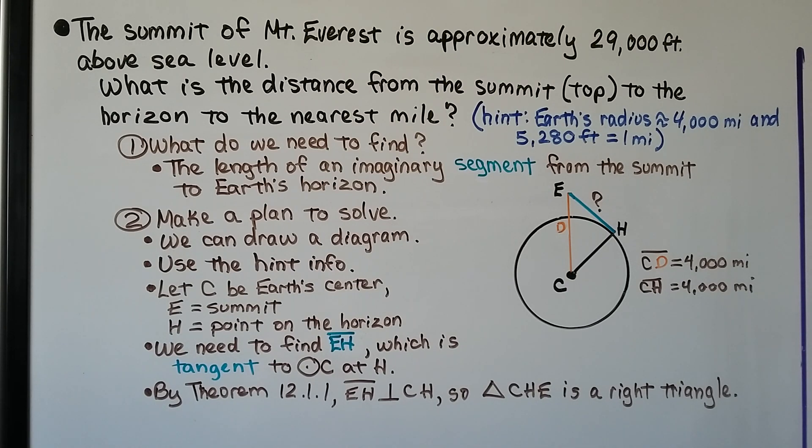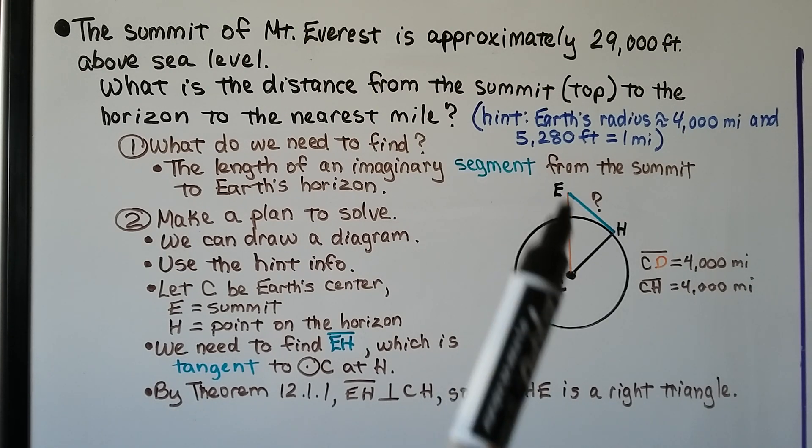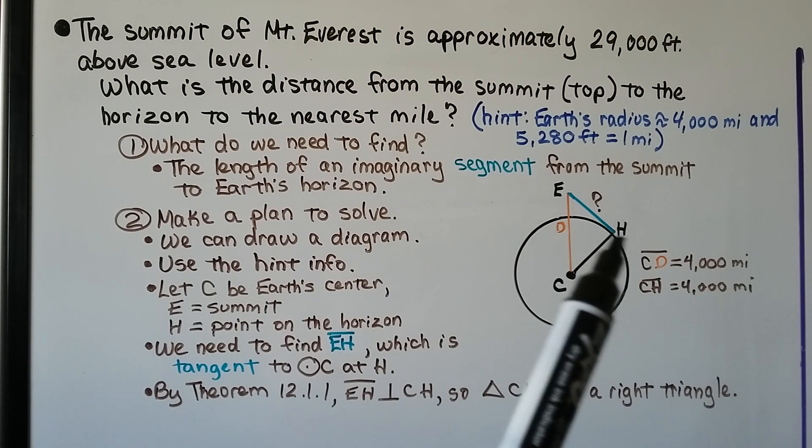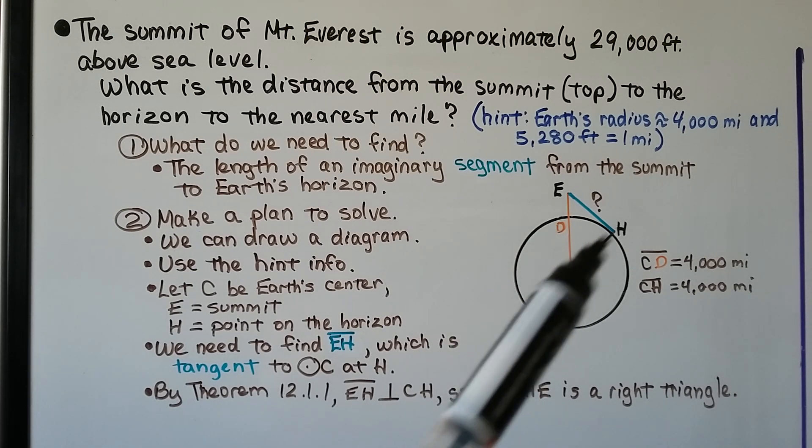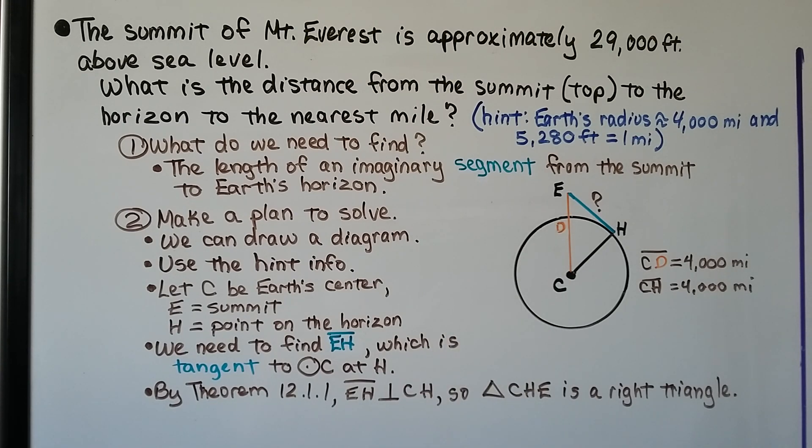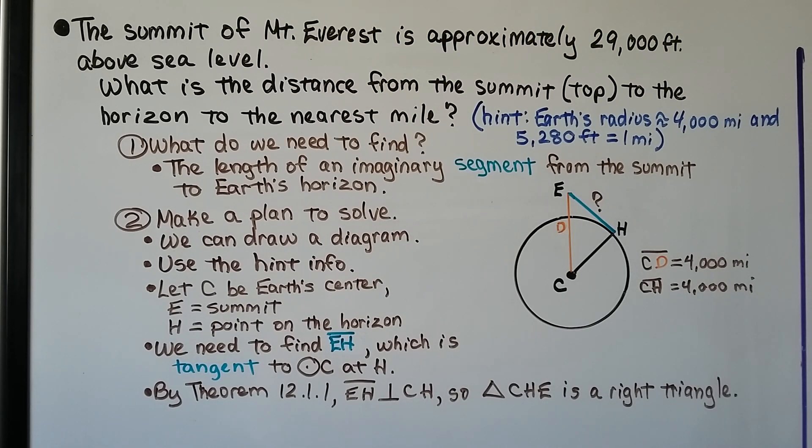We make a plan to solve it. We can draw a diagram. We're going to let C be Earth's center. We're going to let E be the summit for Everest. And we're going to let H be the point on the horizon. We know segment CD must be about 4,000 because that's a radius. If CH is 4,000, then CD must be 4,000. We need to find EH, which is tangent to C at H. And by theorem 12.1.1, segment EH is perpendicular to CH. So triangle CHE is a right triangle.